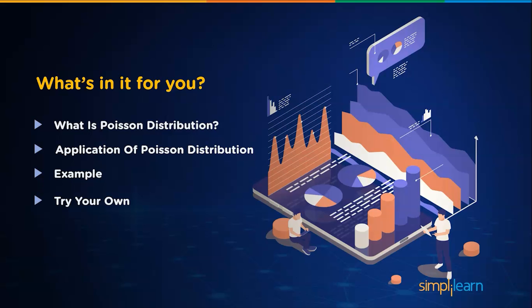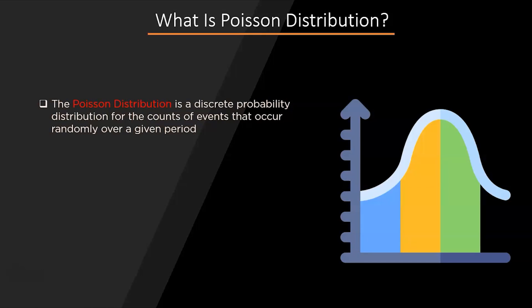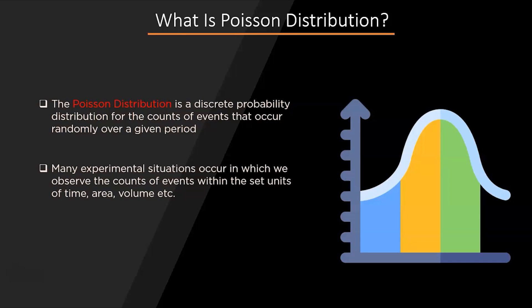So let's begin. A Poisson distribution is a probability distribution used in statistics to show how many times an event is likely to happen over a given period of time. To put it another way, it's a count distribution. Poisson distributions are frequently used to comprehend independent events occurring at a constant rate over a given interval of time.